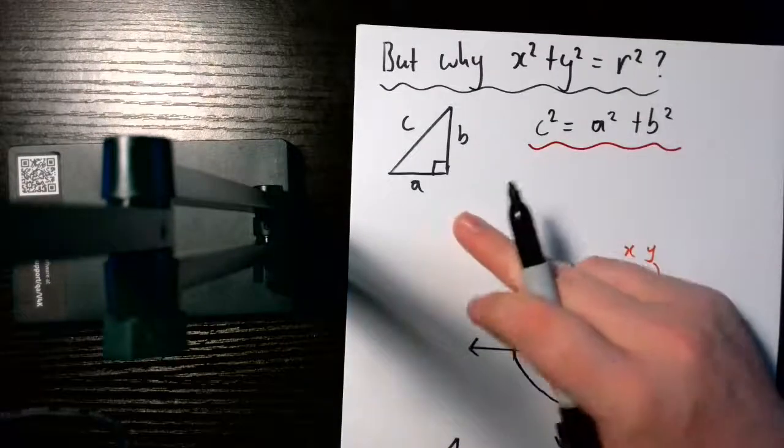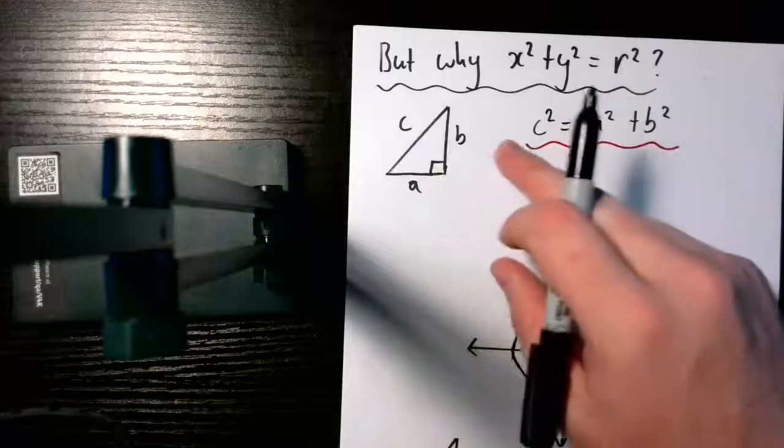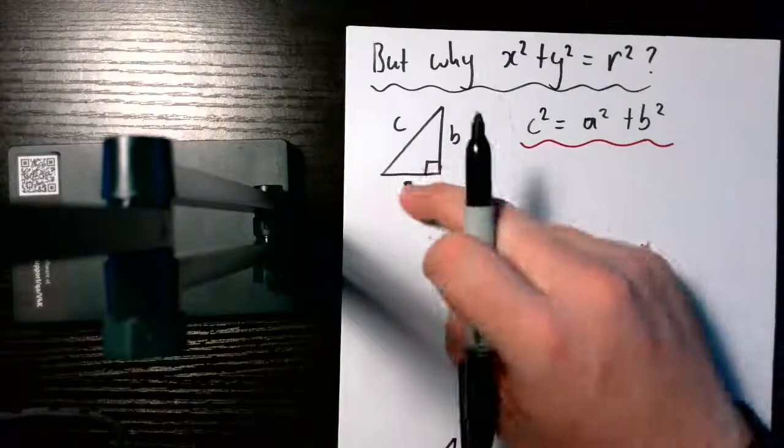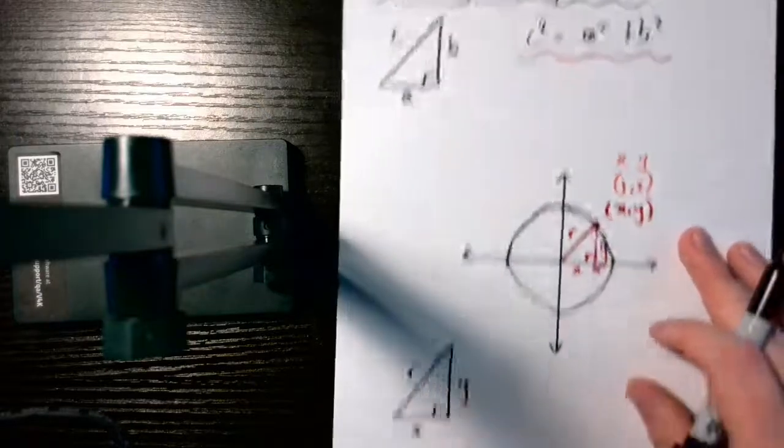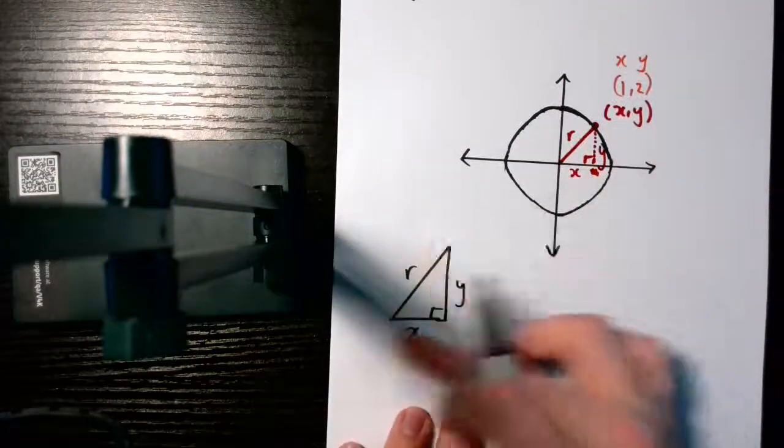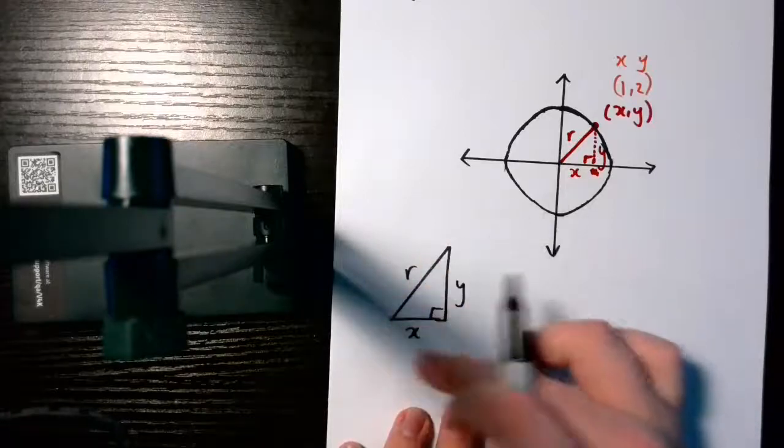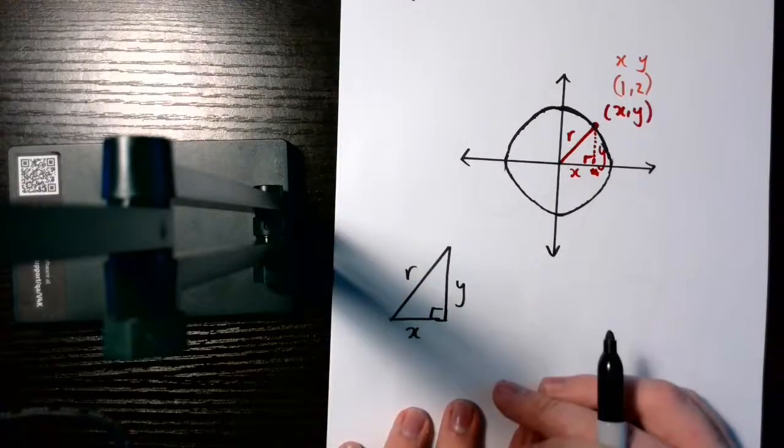Okay, well, just earlier, we went through this and discovered that if we square a, we square b, we can add them together, we'll end up with a hypotenuse squared. Let's apply the same Pythagoras' theorem to end up with the equation for our circle.